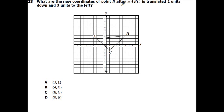Alright, what are the new coordinates of point B after triangle ABC is translated two units down and three units left? So if I just go two down, one, two, three units left, one, two, three, I'm going to be right here. So remember, you always go the X first, so one, two, three, right. So that's positive three, one up, so it's going to be three, one.